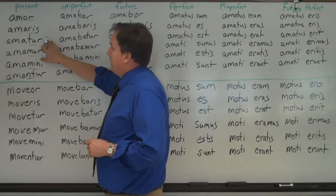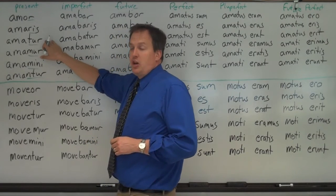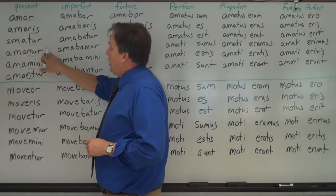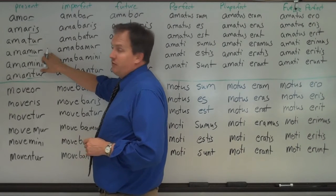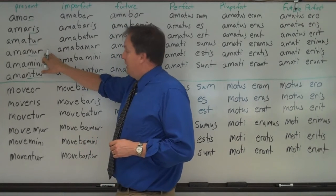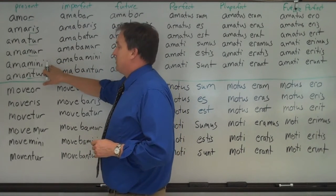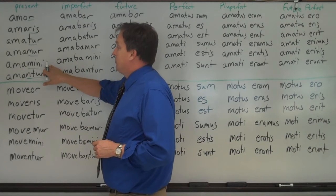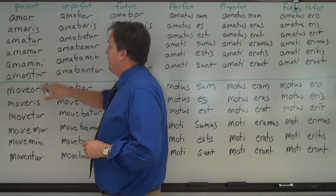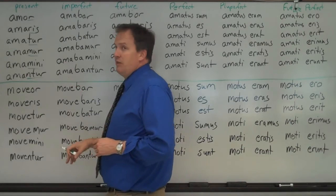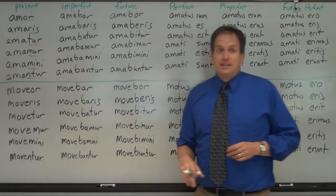Amatur, he is being loved, versus amat, he loves. Amamur, we are being loved, versus amamus, we love. Amamini, you are being loved in the plural, versus amatis, you love. And amantur, they are loved, versus amant, they love.